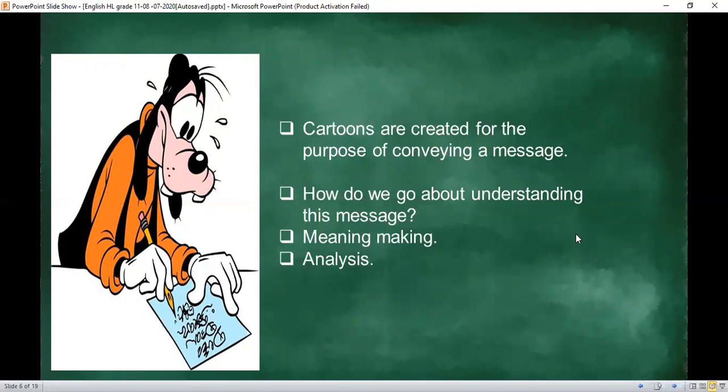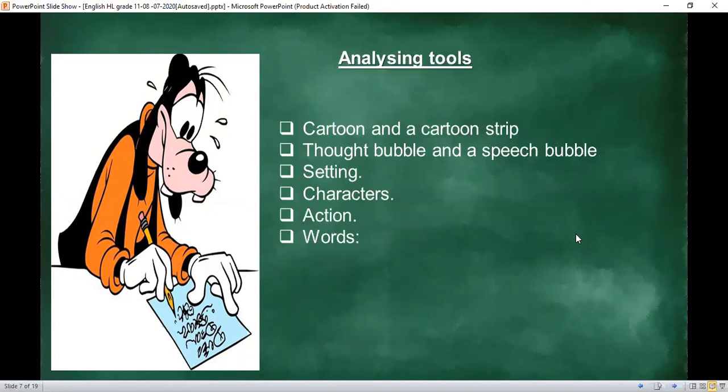It's important to be able to make meaning and analyze. What are some tools? First, understand the difference between a cartoon and a cartoon strip. Understand the thought bubble and the speech bubble. Understand the significance of setting in any given cartoon or strip. Characters - how do they contribute to meaning-making? Action - how do we see it and add it to the analysis? Words - because as much as these are cartoons, they are also written texts. How do they contribute to what the cartoonist is trying to communicate?